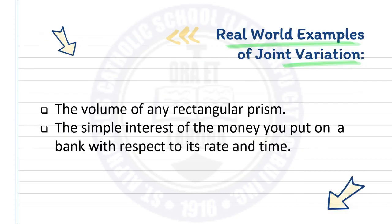Real world examples of joint variation include: the volume of any rectangular prism, the simple interest of money you put in a bank with respect to its rate and time, and many more.